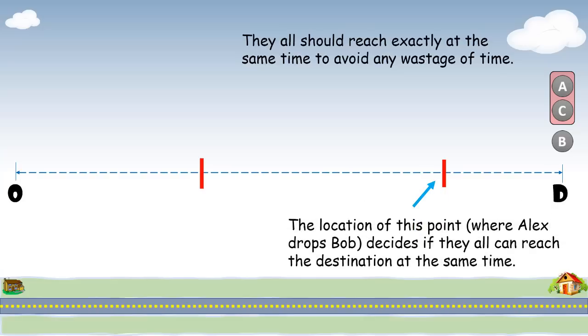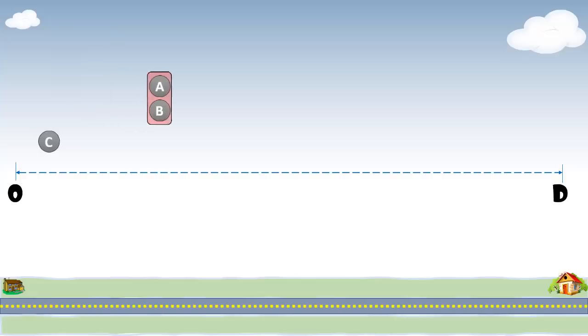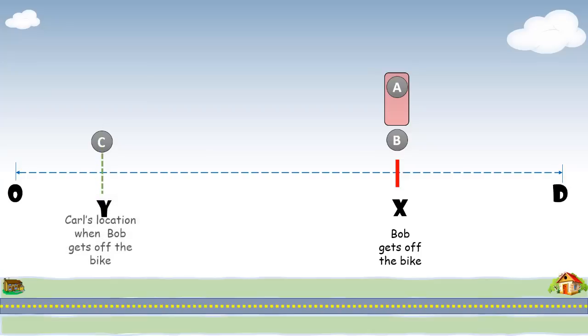Let's visualize the optimization in action. O is the origin and D is the destination. They all start at the same time. Bob gets off the bike at point X. And in this duration, Karl has walked till point Y.